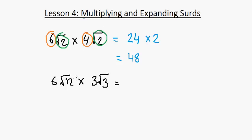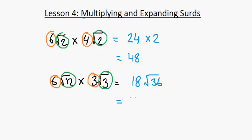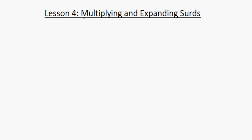I could simplify root 12 to root 4 times root 3, and since root 4 is 2, use that. Instead, I'll multiply directly: 6 times 3 is 18, and root 12 times root 3 is root 36. Root 36 is 6, so the answer is 18 times 6, which is 108.